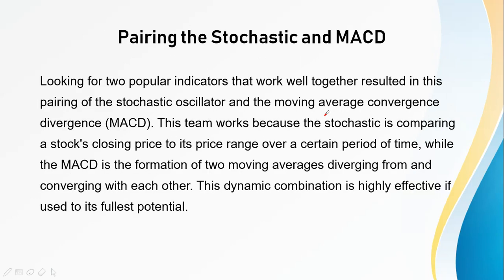Next, we'll pair the stochastic and the MACD indicator. These are two popular indicators that work well together. The stochastic compares the stock's closing price to its price range over a certain period of time, whereas the MACD is formed by two moving averages diverging from and converging with each other. This combination is highly effective when used to its fullest potential.